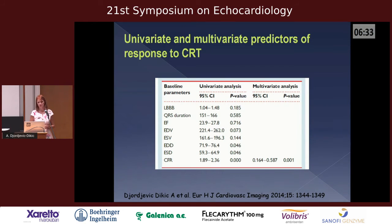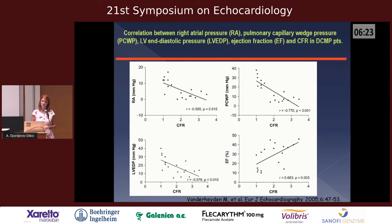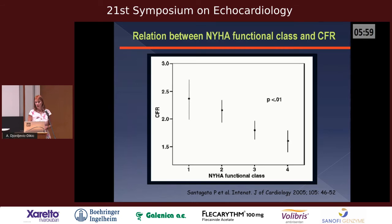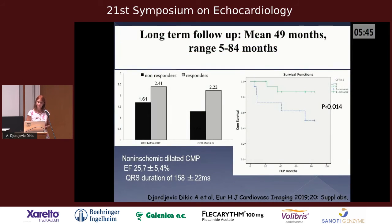The only independent predictors of CRT response we found were end-systolic diameter, systolic diameter, and coronary flow reserve. This is in line with findings from Vanter Hayden, who demonstrated that coronary flow reserve is negatively related to left ventricular end-diastolic pressure, elevated pulmonary wedge pressure, and right atrial pressure. They also showed that coronary flow reserve worsens as NYHA class worsens.